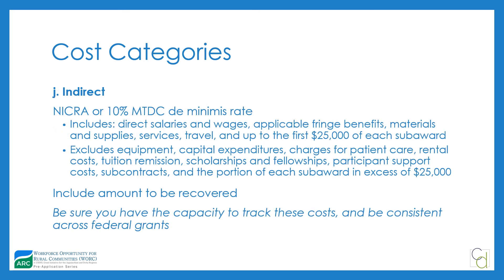The last cost category is indirect. You can use a negotiated indirect cost rate agreement — NICRA — if you have one. If you don't, you can use the de minimis rate of 10% of modified total direct costs (MTDC). Review what MTDC includes, because not all direct costs are included. MTDC includes direct salaries and wages, applicable fringe benefits, materials and supplies, services, and travel up to the first $25,000 of each sub award. It excludes equipment, capital expenditures, patient care charges, rental costs, tuition remission, scholarships and fellowships, participant support costs, subcontracts, and the portion of each sub award exceeding $25,000. Show your indirect calculation in your budget narrative and be consistent across federal grants.